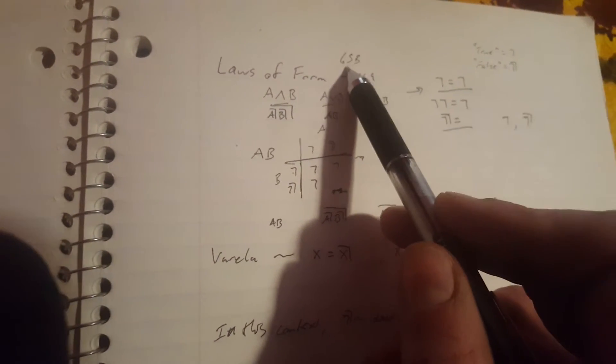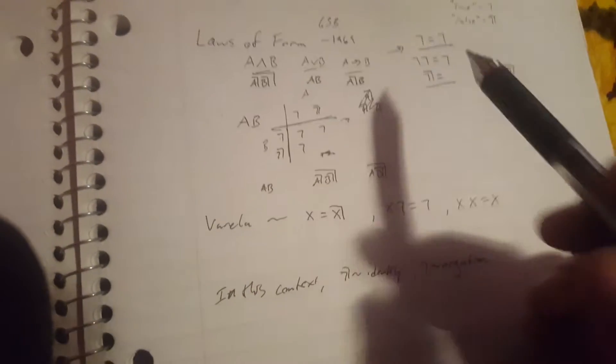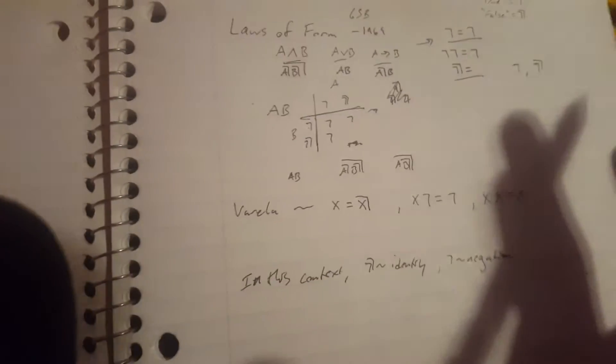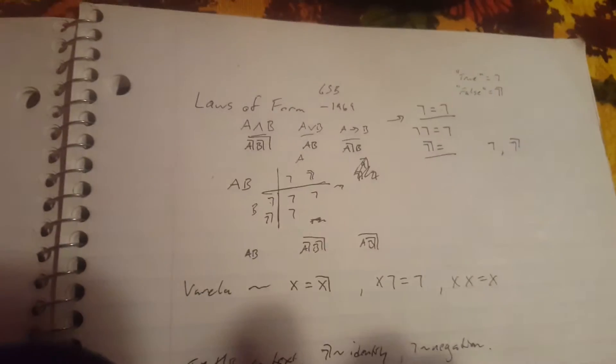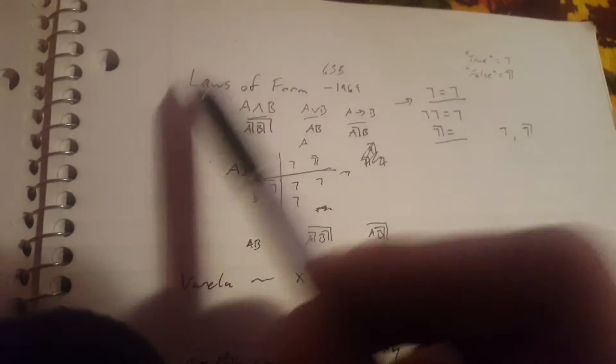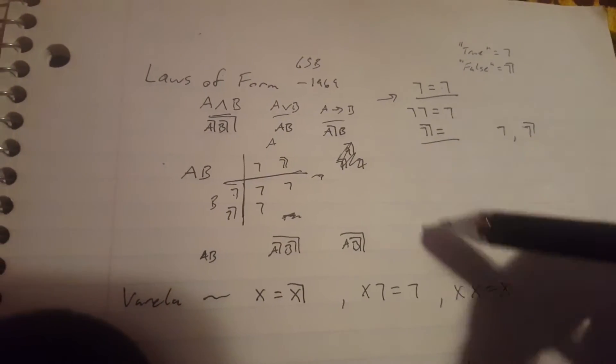But a guy named George Spencer Brown wrote something called Laws of Form in 1969, and it's not a totally unique idea, other people had this idea. Charles Sanders Peirce's propositional logic is fairly similar. Read the Wikipedia page about this if you're interested. It's got a lot of good detail, links to Kauffman's papers on this stuff, etc.